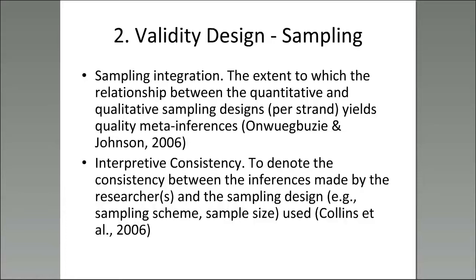You're not introducing unwanted variation into the design because the same participants — same characteristics — are responding to both the quantitative and qualitative phases of the study. As you introduce more complexity into the research design, it's important to recognize that you need to address potential biases associated with your sample selection. A term coined by Collins et al. 2006 is interpretive consistency — a validity check where you denote to your audience the consistency between the inferences made by the researcher and the sampling design. In other words, did you over-generalize? If you do not have a random sample, is it appropriate to generalize from your sample to the population as a whole?